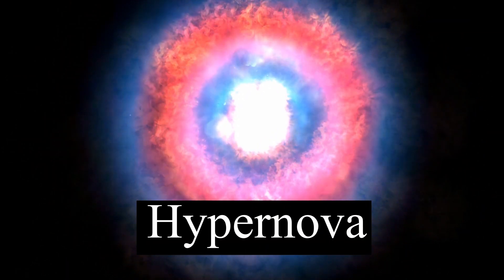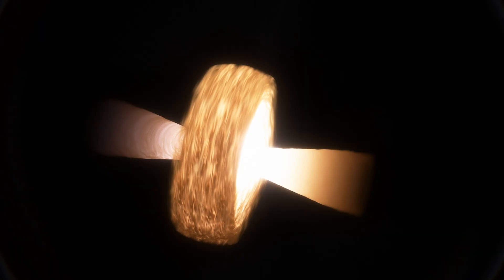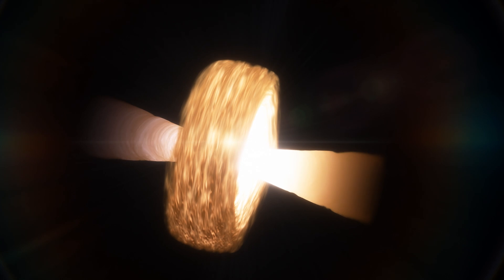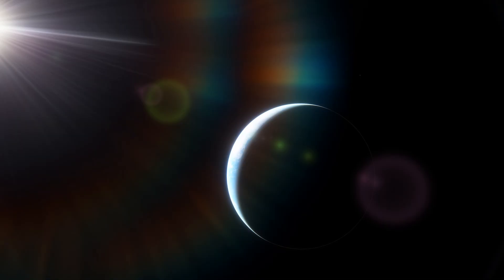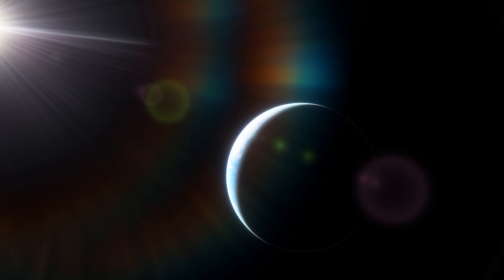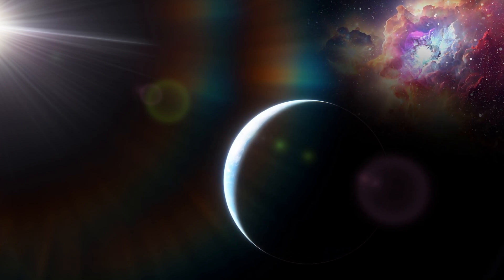Hypernovae are one of the mechanisms for producing long gamma ray bursts, which range from 2 seconds to over a minute in duration. All observed GRBs have originated from outside the Milky Way galaxy, although a related class of phenomena are associated with magnetars within the Milky Way. It has been hypothesized that a gamma ray burst in the Milky Way, pointing directly towards the Earth, could cause a mass extinction event.